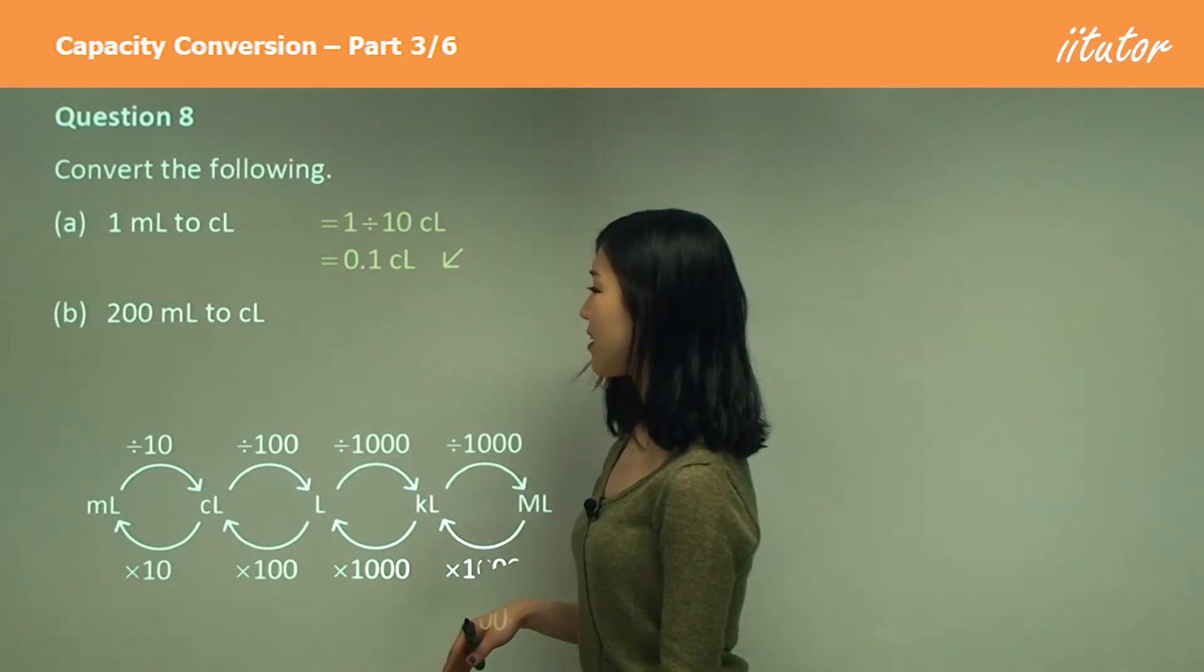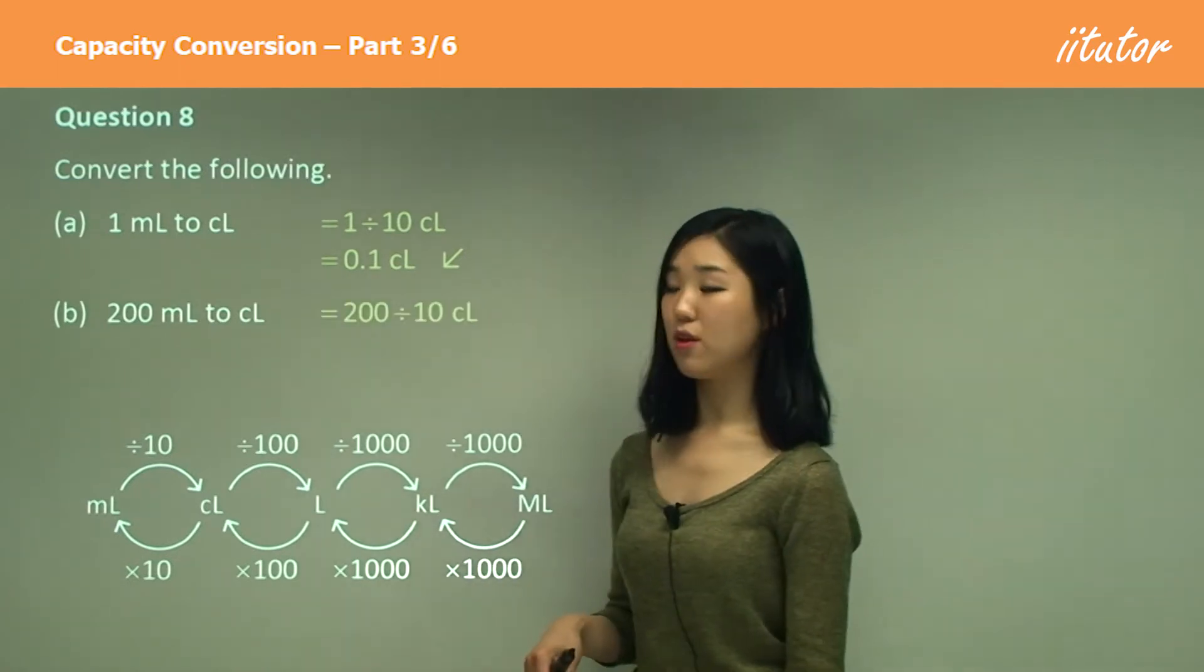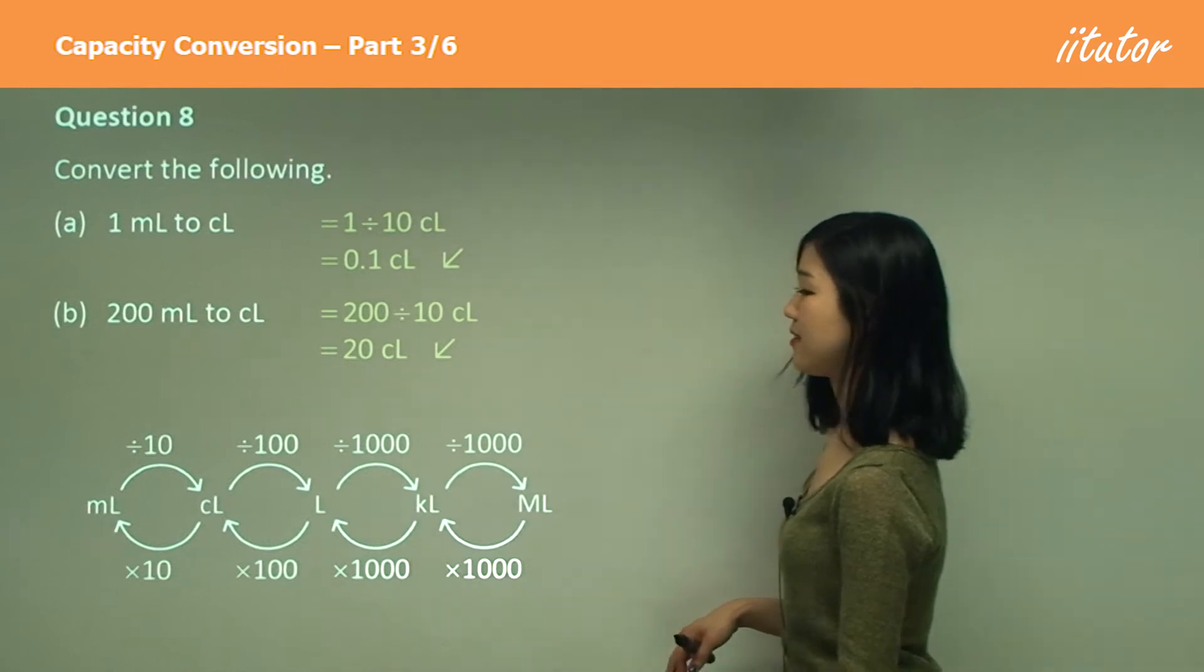200 milliliters to centiliters again, divide 200 by 10, which will get you 20 centiliters.